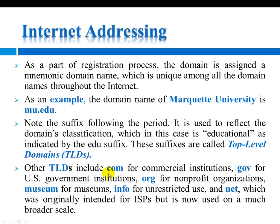Other top-level domains include .com for commercial institutes, .gov for government institutes, .org for organizations, .museum for museums, .info for unrestricted use, and .net, which was originally intended for internet service providers.